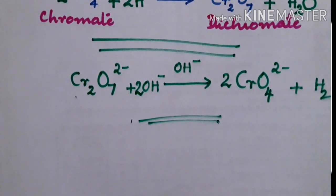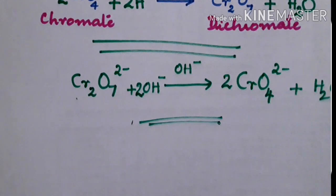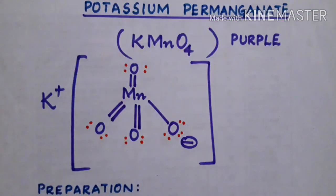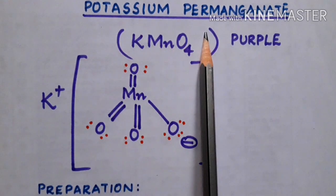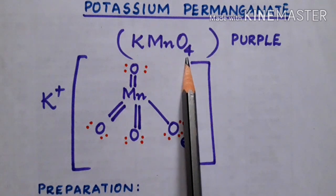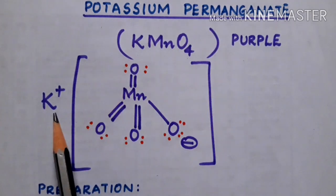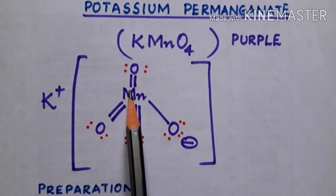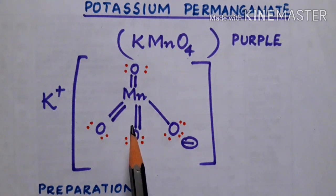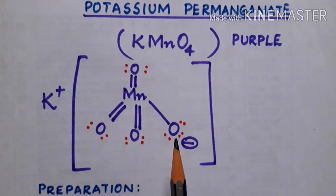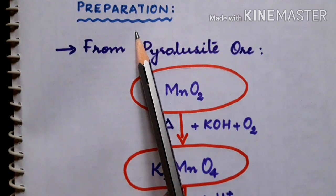The second compound is potassium permanganate, with the formula KMnO4. It is a purple colored crystal with the structure K+ and MnO4-. The MnO4- ion has one negative charge and double bonds, giving it resonance in its structure.